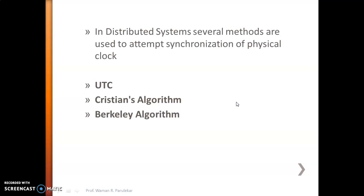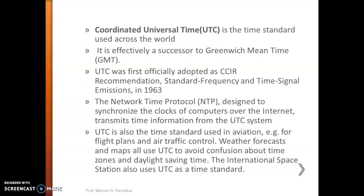In this video we will cover UTC; separate videos will cover Cristian's algorithm and Berkeley's algorithm. UTC is nothing but Coordinated Universal Time. It is a standard time used across the world and is the successor of Greenwich Mean Time (GMT). It was first invented in 1960 but officially adopted in 1963. The Network Time Protocol (NTP) uses UTC to synchronize clocks over the internet — it was invented to use UTC time to synchronize the clock of the client with the server.